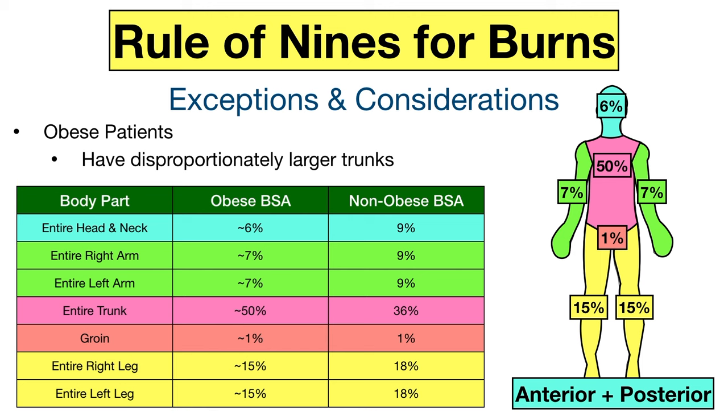For obese patients, the entire head and neck is 6%, each arm is 7%, the groin is 1%, and each leg is 15%.